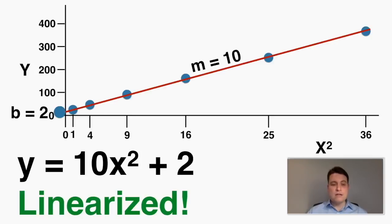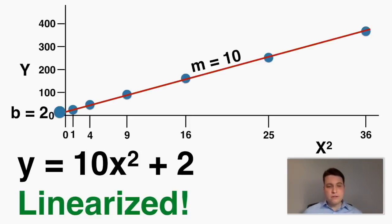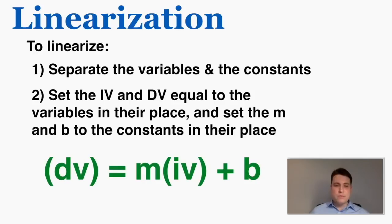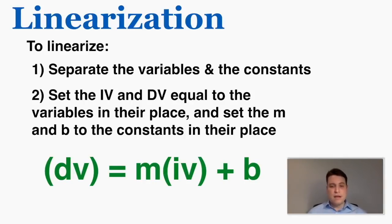Here 10x squared plus 2 is linearized, and I can use this to make future predictions about what these numbers will be. To linearize, you basically have to take two steps: separate the variables and the constants, and set the iv and dv equal to the variables in their place, and set m and b equal to the constants in their place. I'm going to give you a few examples of this just to make sure you're clear.